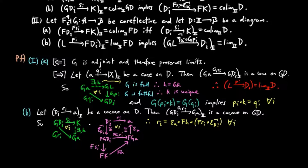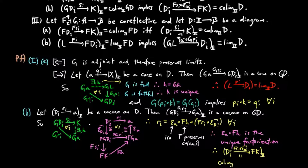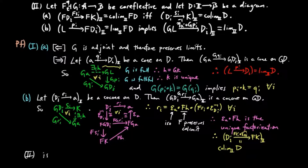But since epsilon A is an isomorphism and F preserves co-limits, epsilon AFH is the unique factorization. Therefore, the co-cone FSI epsilon inverse DI is the co-limit of D. Two is just the dual proof, and so we are done.